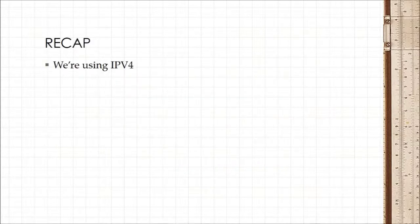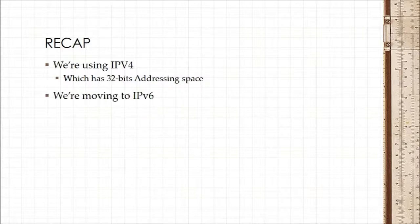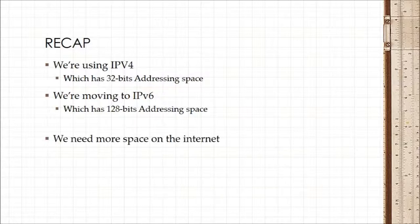So just to recap, we're currently using IPv4 that has 32 bits addressing space, and we're moving to IPv6 that has 128 bits of addressing space, and the reason why we need that is because we need more space on the Internet.